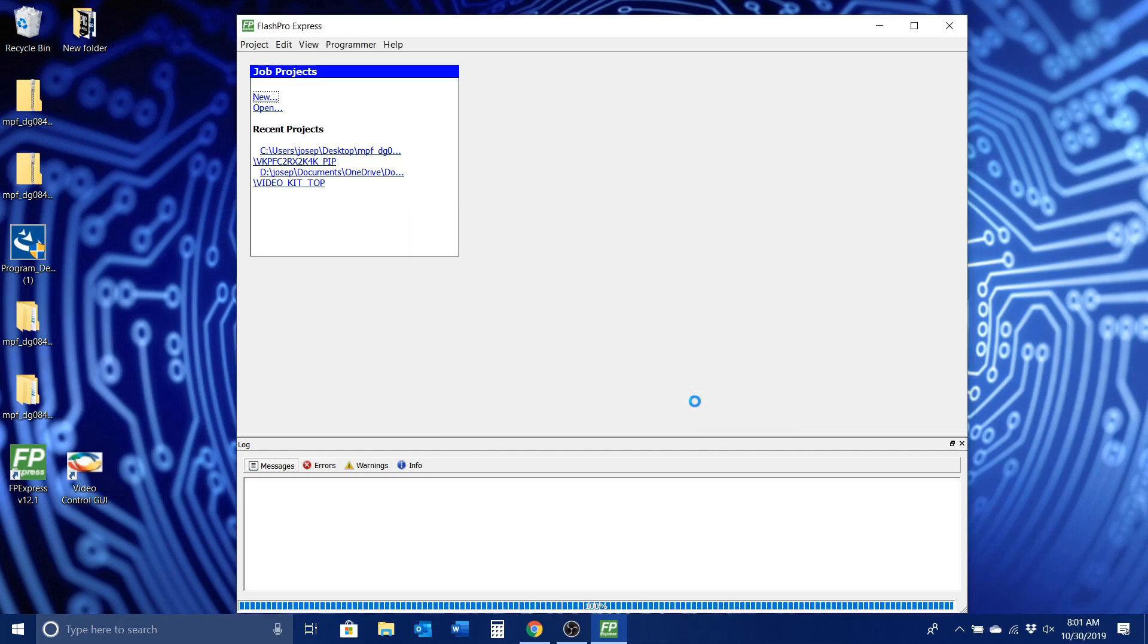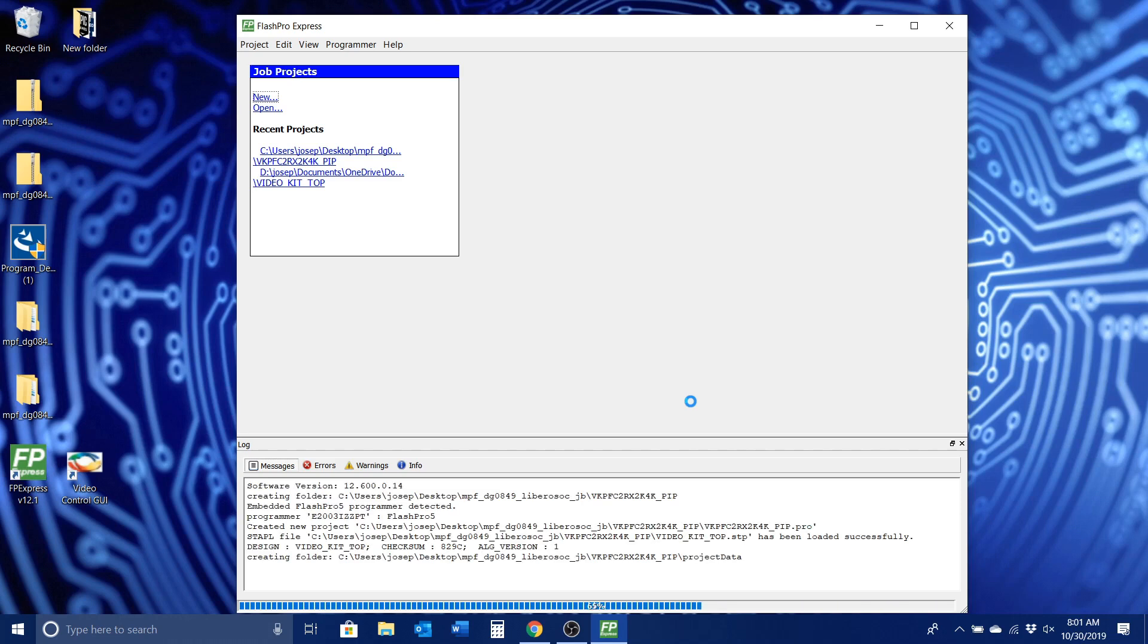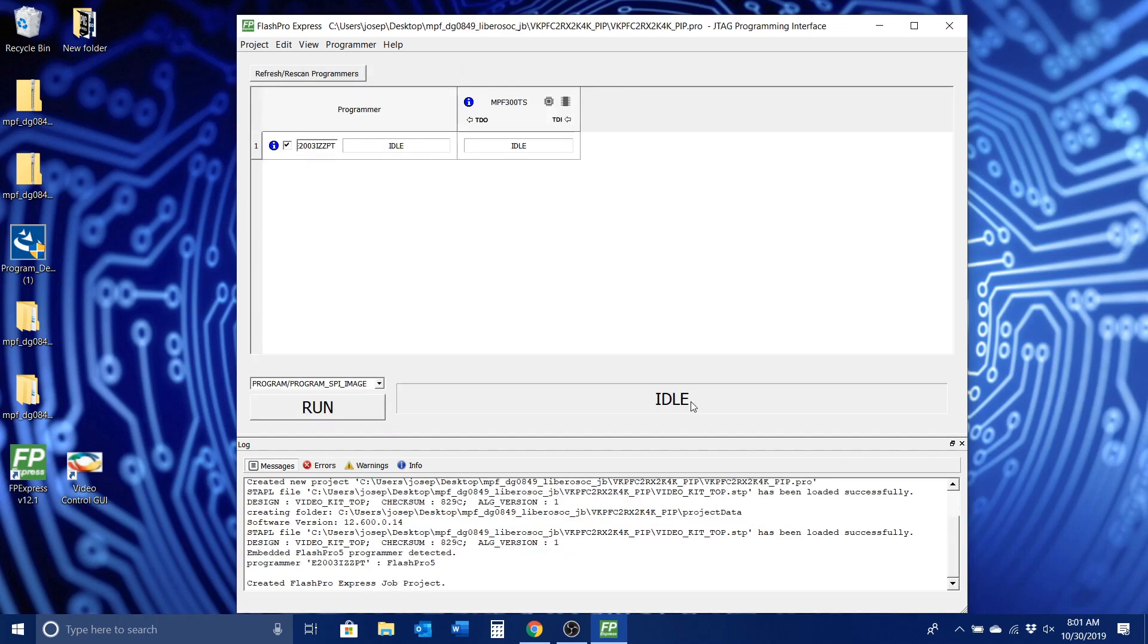Connect the Mini USB cable from your PC to J12 on the PolarFire. Verify that the programmer and device are detected. If not, you may need to reset the board, check your connections, or try to refresh rescan for programmers. Click Run.